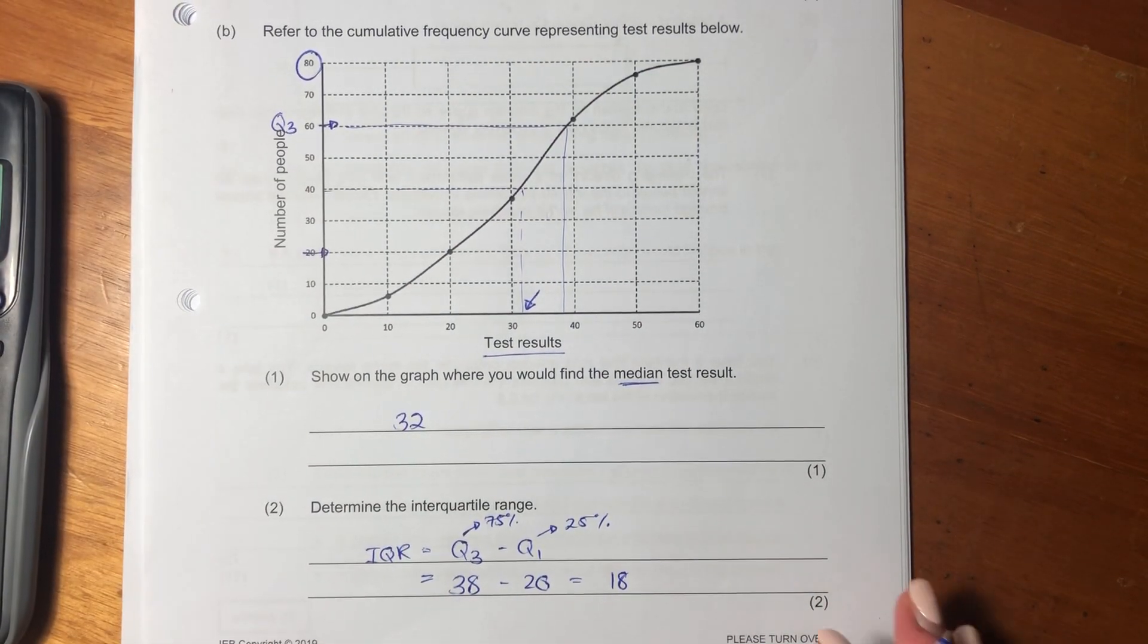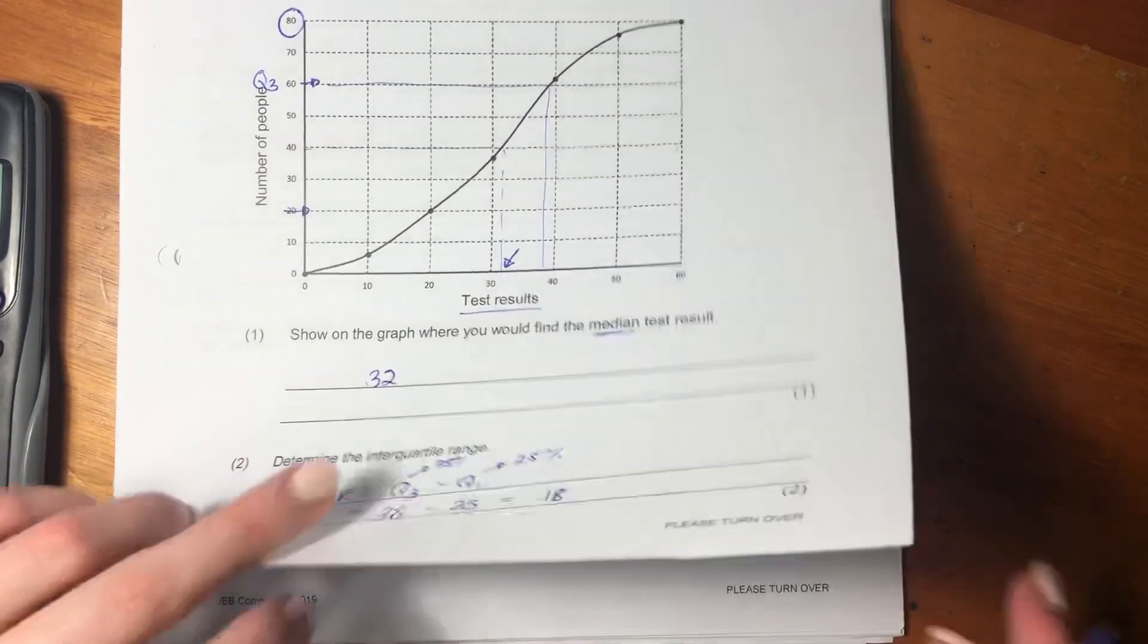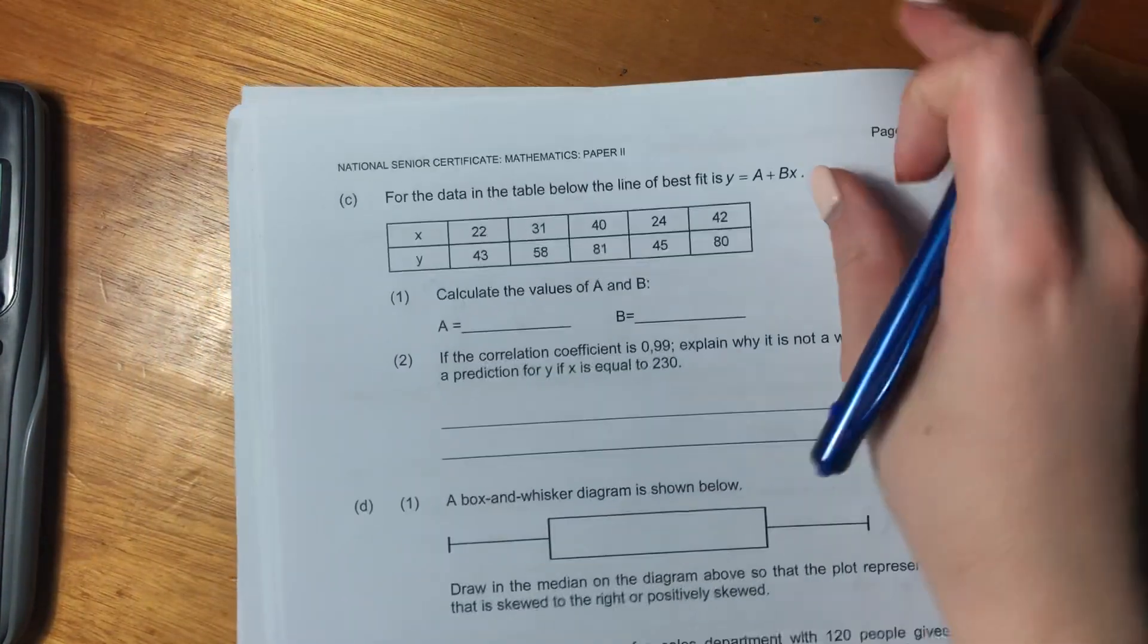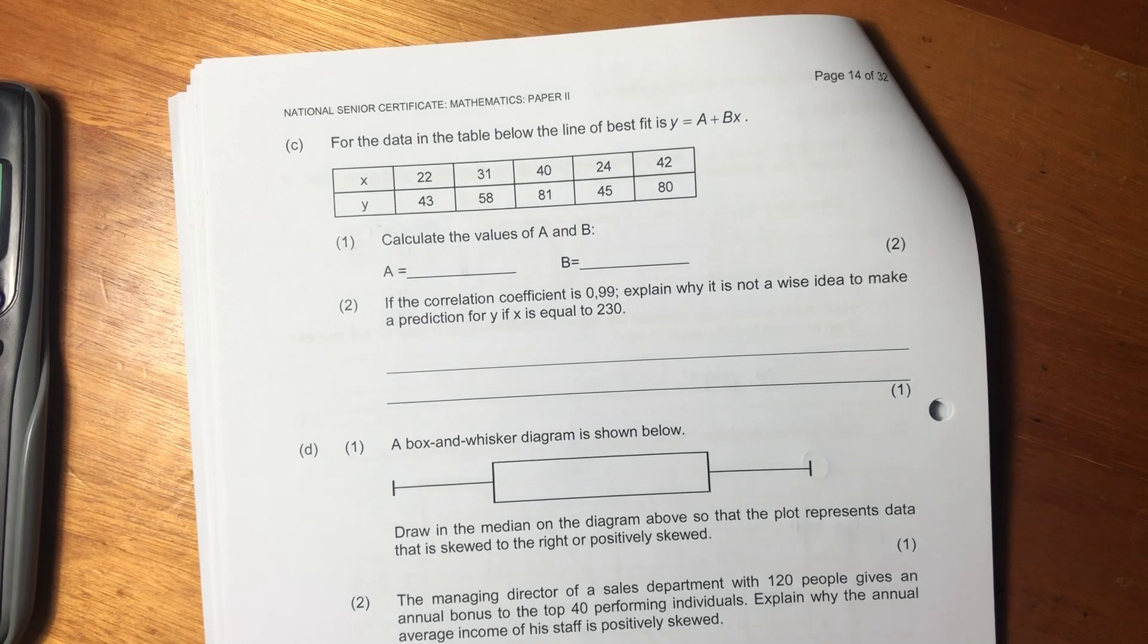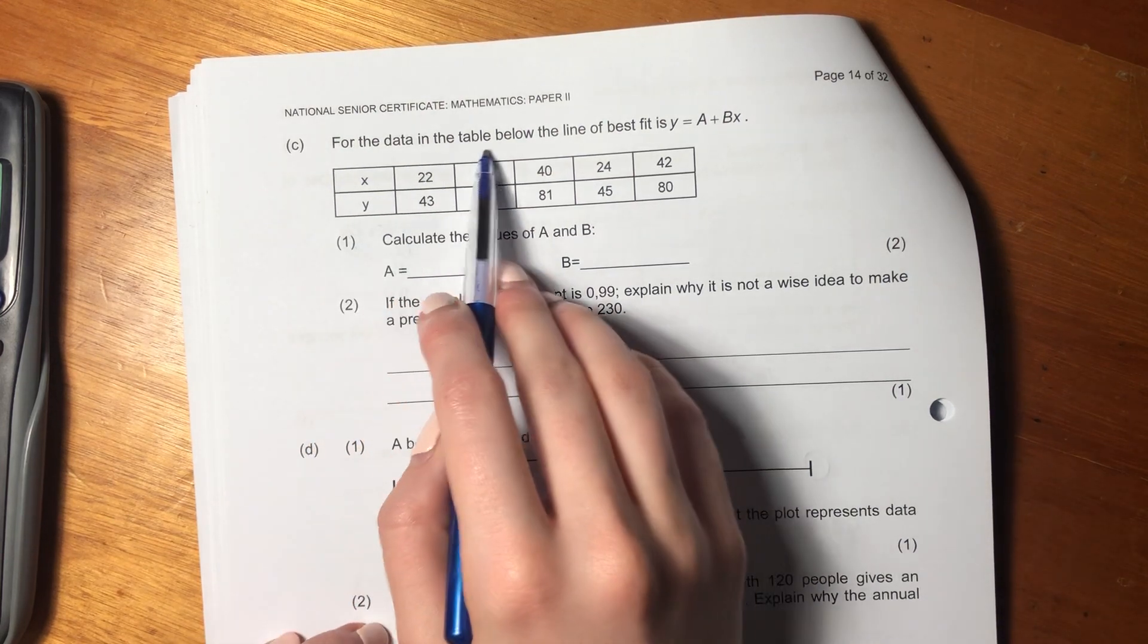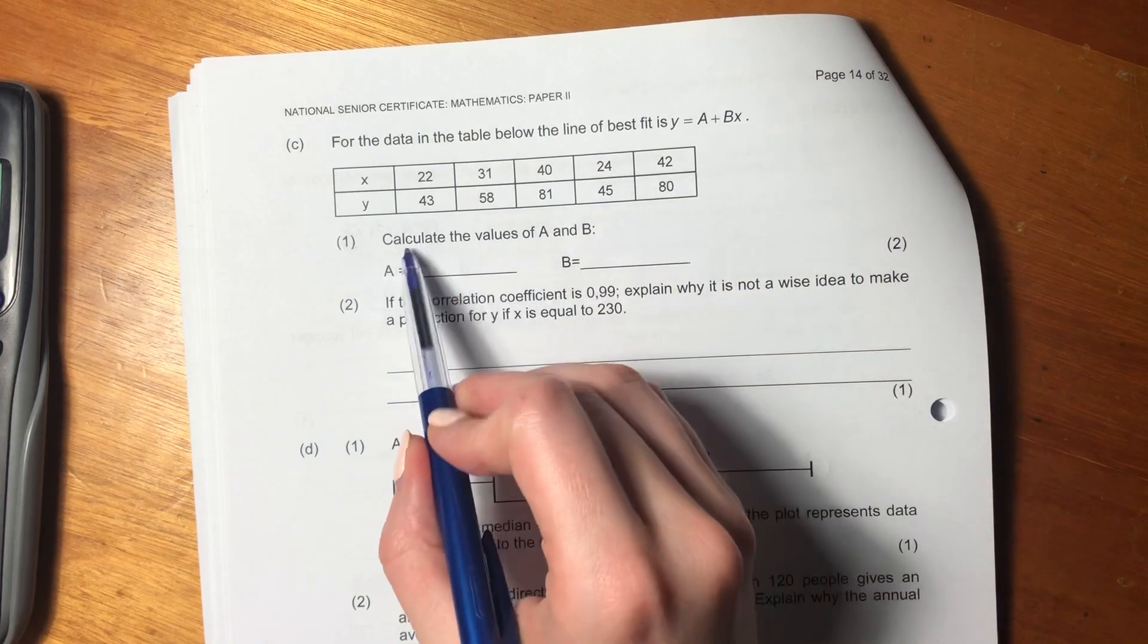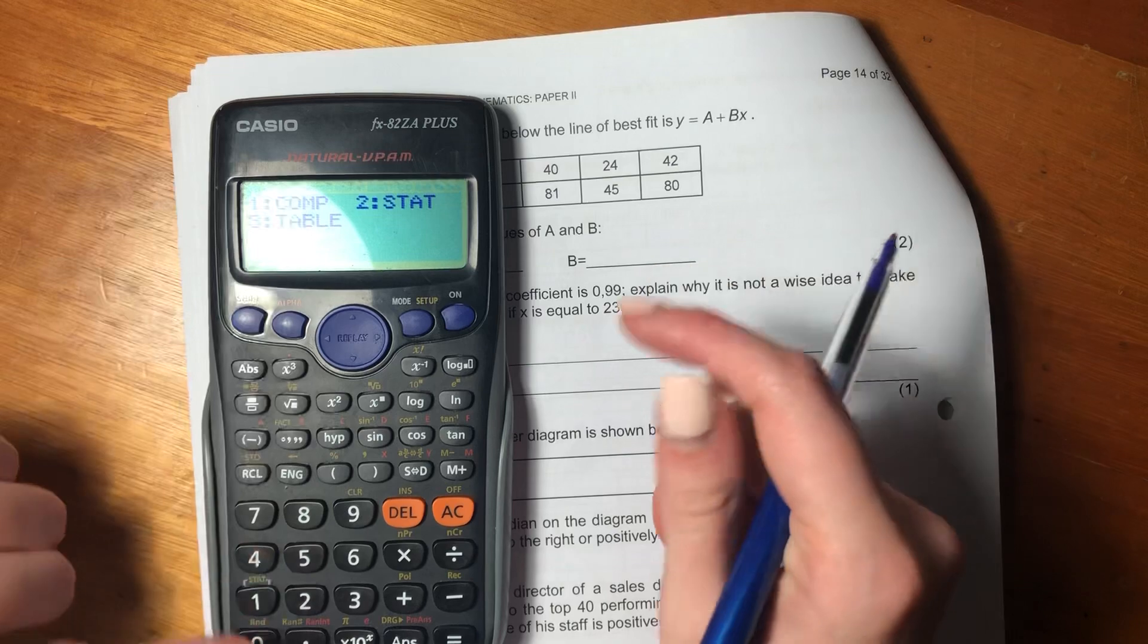Let's now move on to the next question. I'm just going to move stuff so that you can see what I'm writing. Okay, cool. So we're given this table of data. It says, for the data in the table below, the line of best fit is Y equals A plus BX. Calculate the values of A and B. Let's do this on our calculator.